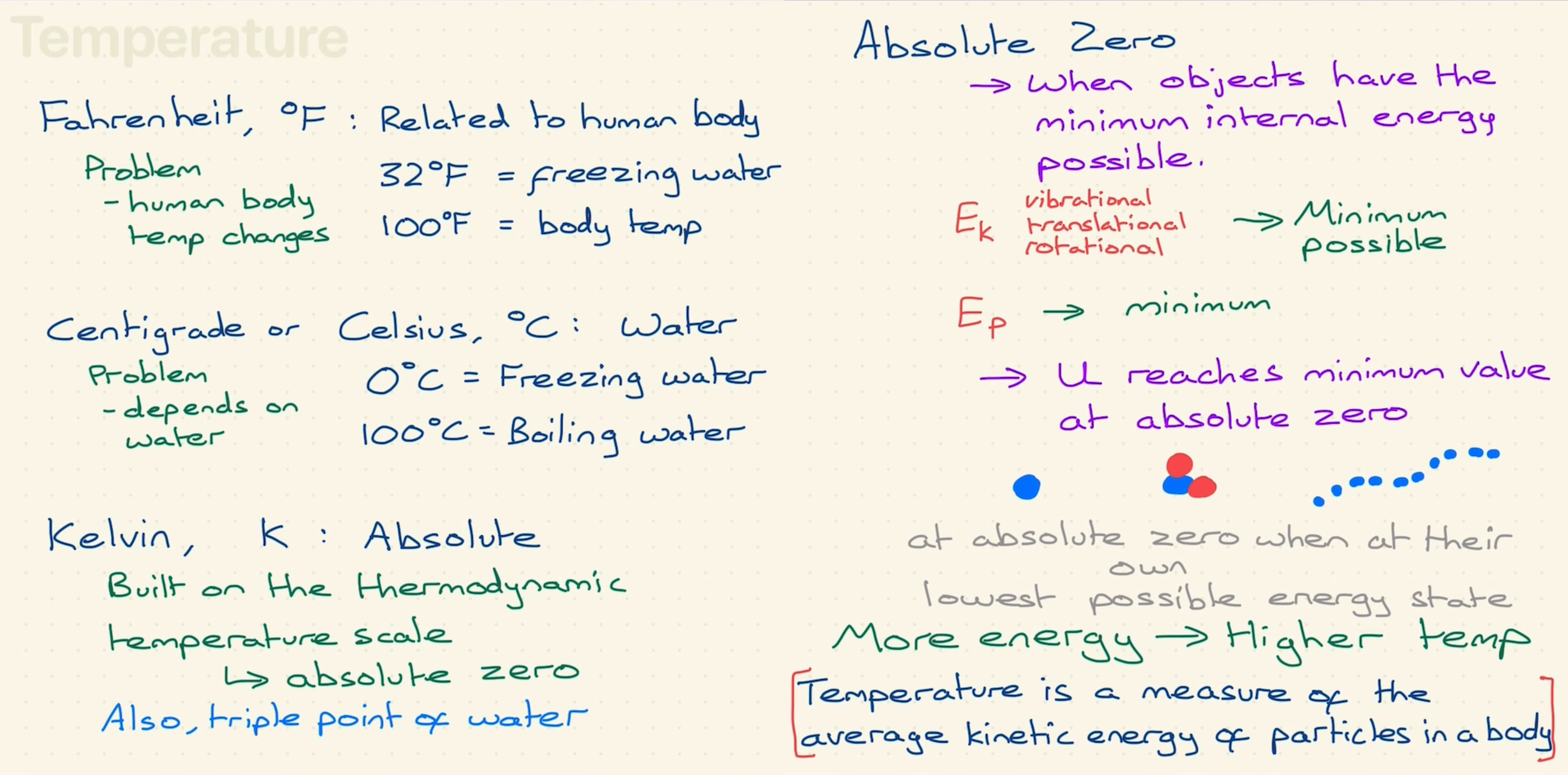The triple point of water is the temperature when all three phases of water are in equilibrium. So that means liquid, solid, and gas are all present at the same time. This happens at 0.01 degrees Celsius, so that is the upper fixed point.